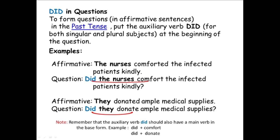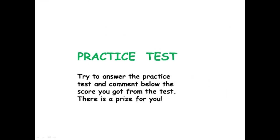So the question should be: did the nurses comfort the infected patients kindly — did as the auxiliary verb and comfort in the base form. Another example: they donated ample medical supplies. The subject is they, which is also plural. So we use did. The question should be: did they donate ample medical supplies? We remove ed from donated and form the question: did they donate ample medical supplies? Did + the verb donate. So that's all for today.